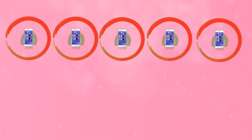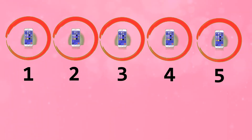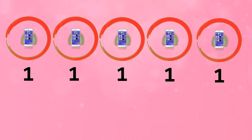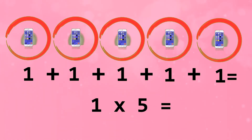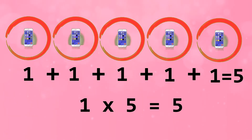How many groups? There are five groups. How many in each group? There is one in each group. How many all together? There are five all together.